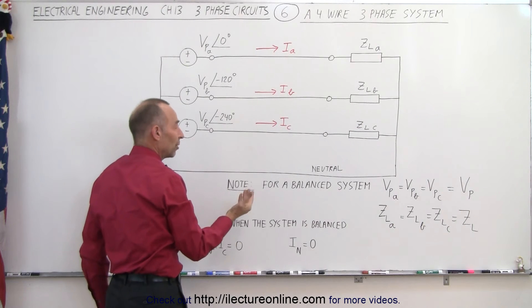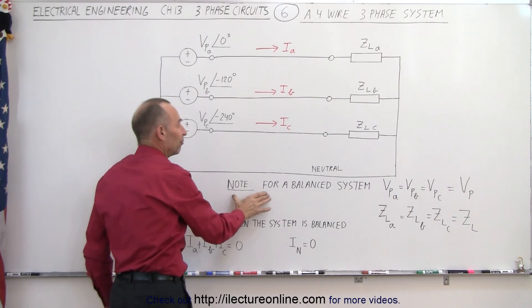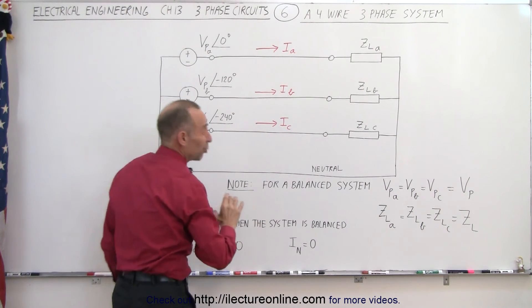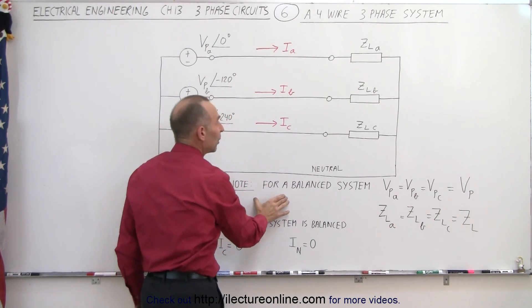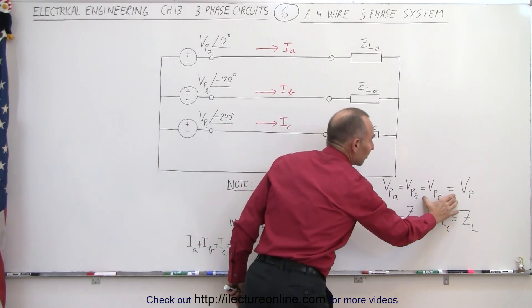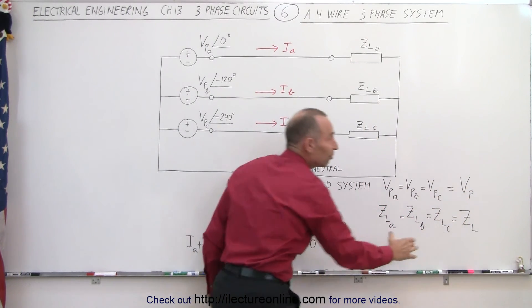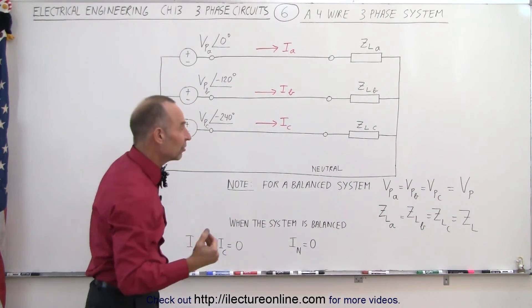So basically, in summary, if we have a balanced four-wire three-phase system, or even a three-wire three-phase system without the neutral, but if there's a neutral there, we can say that the voltages must have the same magnitude, the impedances must be exactly the same on each of the three wires,